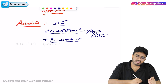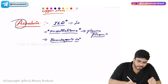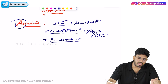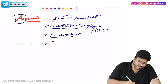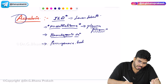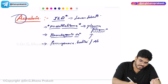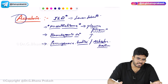In asbestosis, the lower lobes of the lung are going to be affected. On histology, you will see ferruginous bodies — also called asbestos bodies — which are dumbbell-shaped. These ferruginous/asbestos bodies are seen on histology along with pleural plaques.